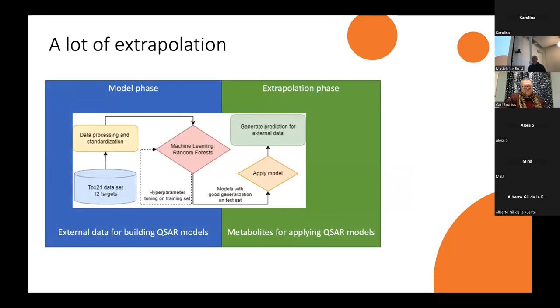There is a lot of extrapolation here. It's all model-based, and we have two phases. We have the model phase where we build models which can estimate toxicity from chemical structures. The assumption is that toxicity or biological activity is a function of chemical structures. Then the second part, the extrapolation phase, is where I apply these models to understand whether the metabolites might be biologically active.